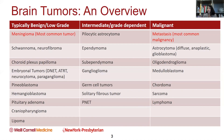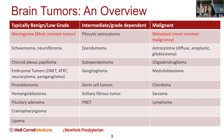Benign doesn't mean that it doesn't cause problems. Benign pathologies can cause significant local mass effect and can be very invasive. But when we talk about benign and malignant, we're really talking about how aggressive it is and its metastatic potential.